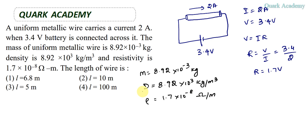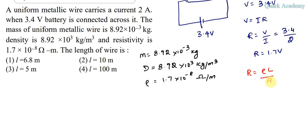We know the resistance can be written as R = ρL/A, where ρ is resistivity, L is the length of the wire, and A is the area of cross section. But in this question we don't know the area of the wire.